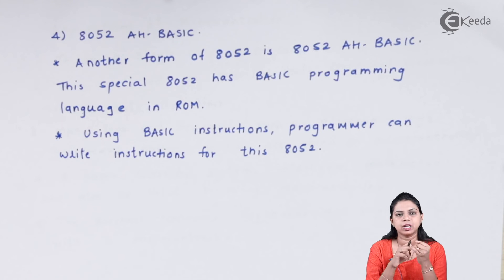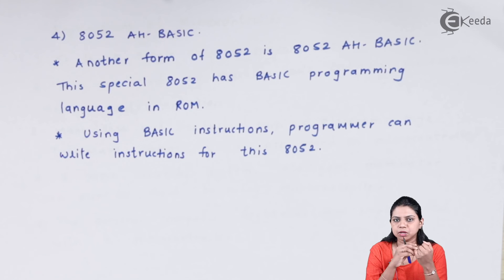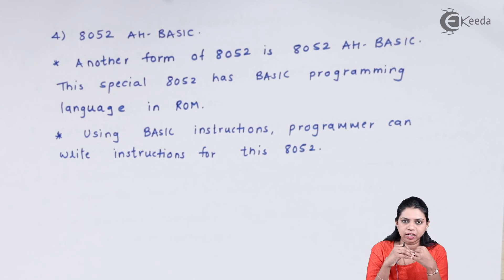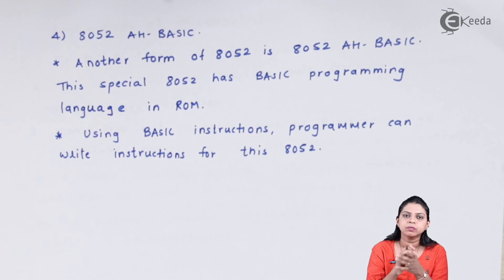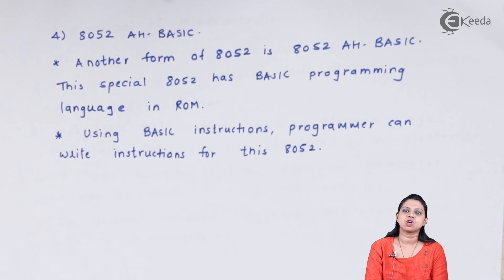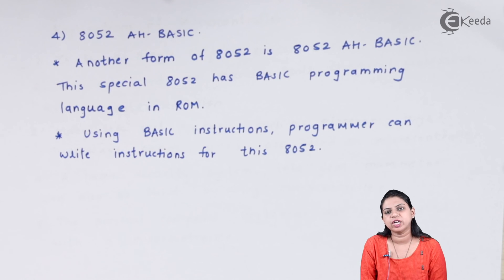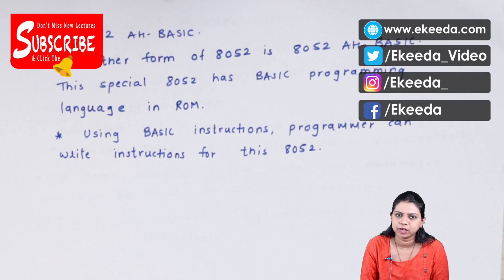So there are four categories in the family of 8051. First, 8048, 8049, and 8050 — all same in architecture but differing only in memory size. Second, 8052 — an expanded version of 8051 where memory doubles, allowing larger programs and more data storage, but at a higher cost. Third, 8031 and 8032 — alternate versions of 8051 and 8052 with no onboard ROM, requiring external memory. Fourth, 8052 AH Basic — where you can use BASIC programming language instructions to write a program.